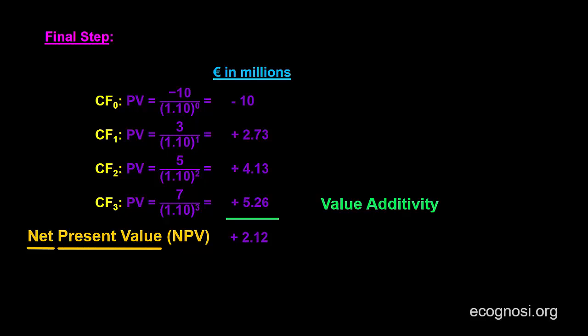If the net present value turned out to be negative, then it wouldn't make sense for a given firm to undertake this project as it would destroy value instead of creating. And this is another way of saying that the firm would lose money as it would receive less than the amount it invested on the project.